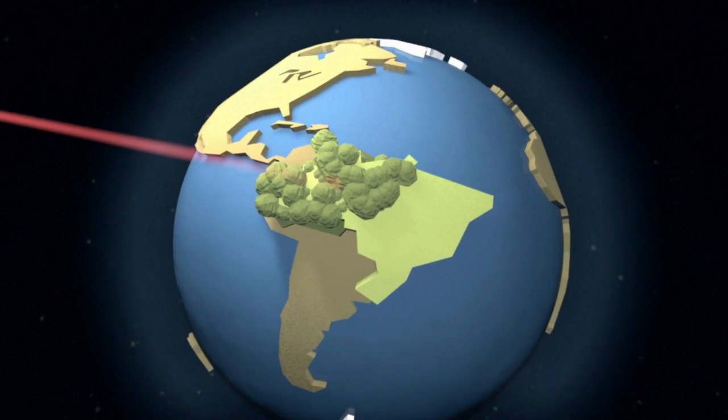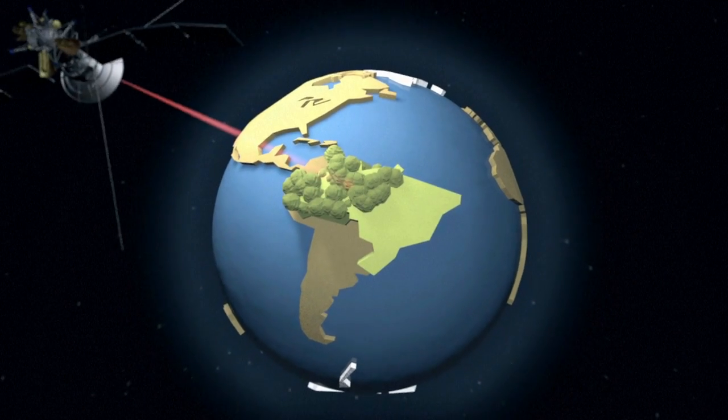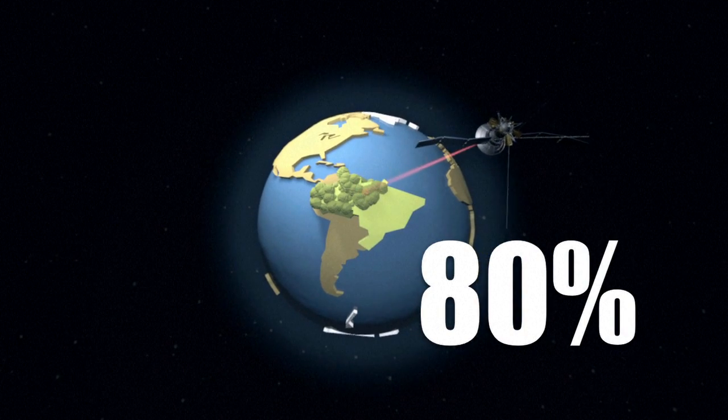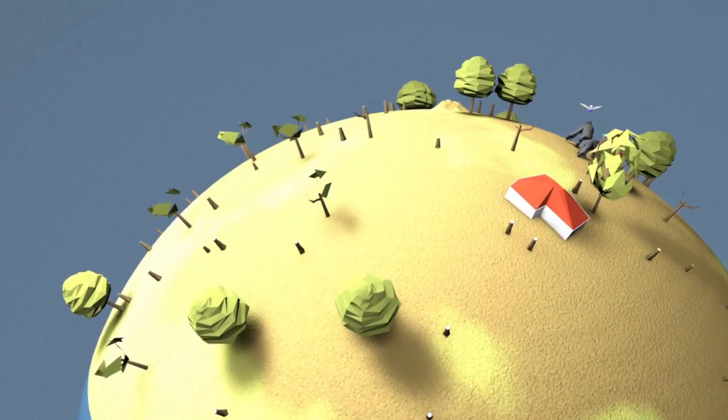In Brazil, satellite data that locates areas of illegal land clearing in the area has helped slash deforestation by some 80% since it hit a record high in 2004. But it's still a major problem.